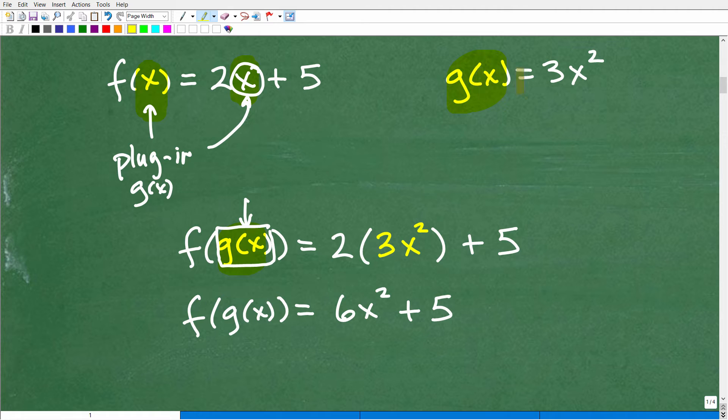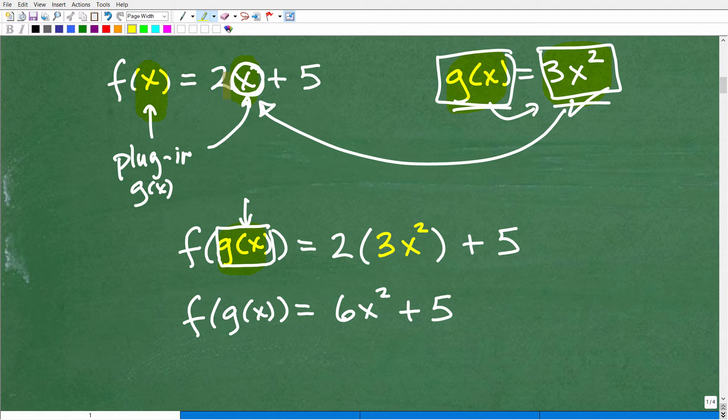So we're going to replace this right here with the g of x function. So you're not going to write g of x there. Because g of x is equal to 3x squared. Like I can write this or I can write 3x squared. So f of g of x is we're plugging in the g of x function, 3x squared. And what gets students confused is they lose track of the bigger function. You've got to make sure that it's 2 times the g of x function. So it's going to be 2 times 3x squared plus 5.